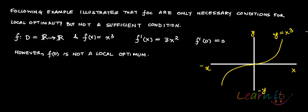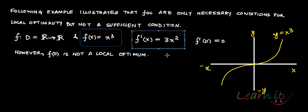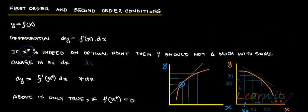However, this is only a necessary condition, not a sufficient condition. For example, if f(x) equals x cubed, then f'(x) equals 3x squared. Setting f'(x) equal to zero gives the critical point x equals zero, and f'(0) equals zero. But this is neither a local max nor a local min. So first order conditions are just necessary conditions to hold. For the first order condition to be satisfied, f'(x) should be equal to zero. In the next recording, we're going to talk about second order conditions.